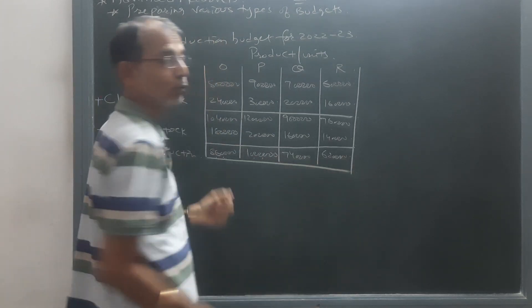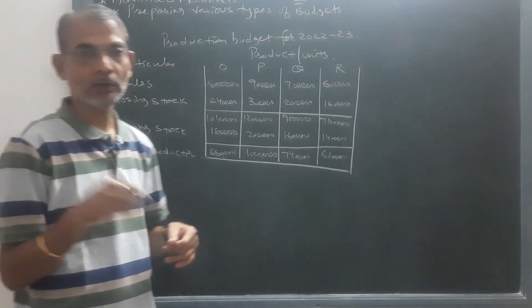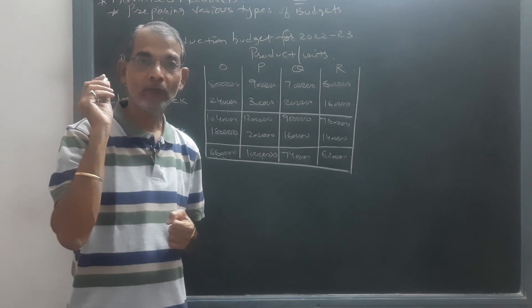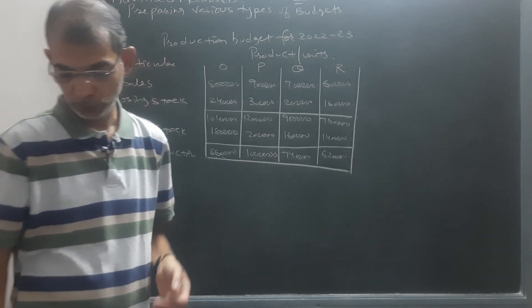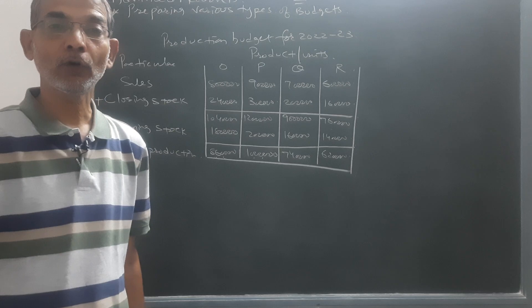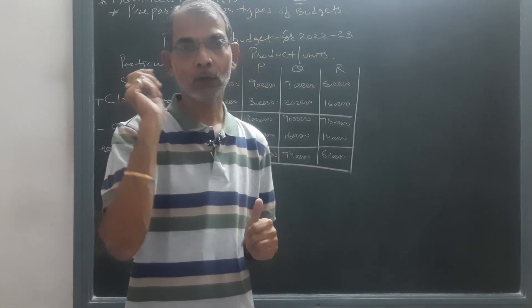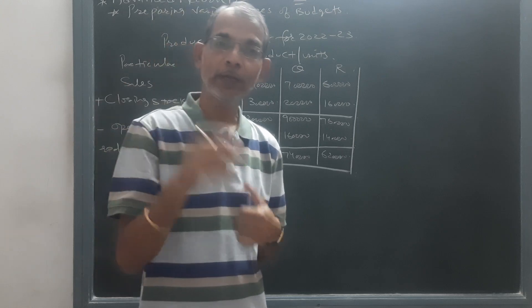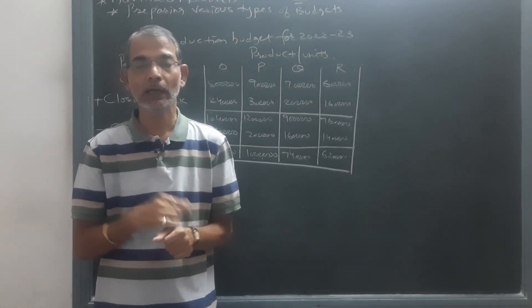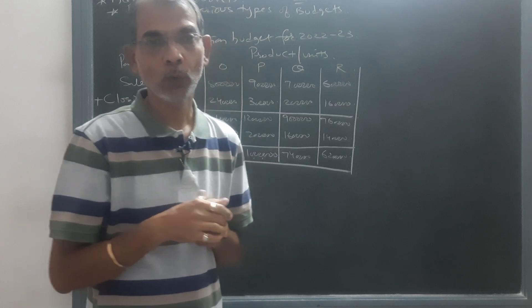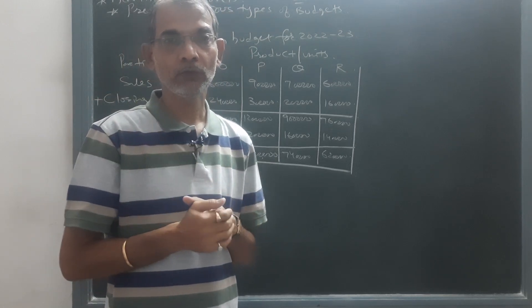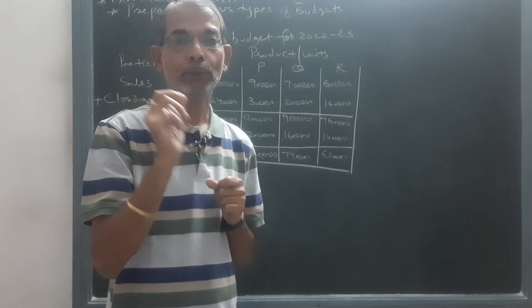First of all you have to take sales, in that you have to add closing stock, from that opening stock will be subtracted, and we will come to know the number of units which are to be produced.